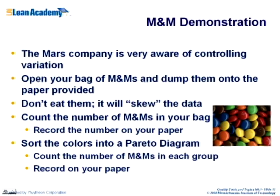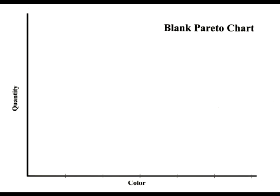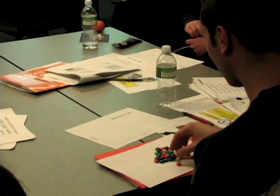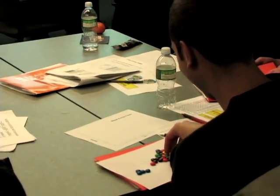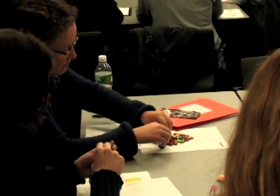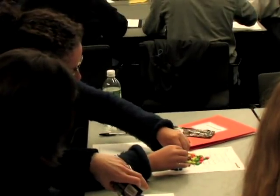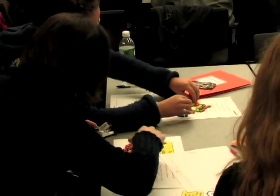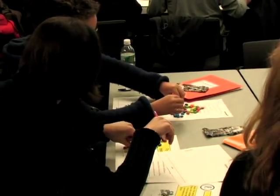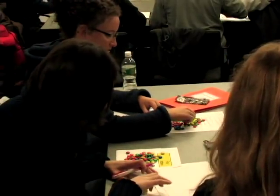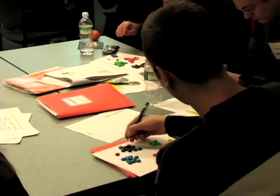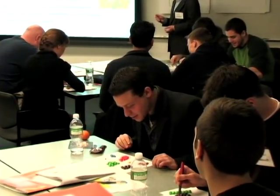Here's a fun exercise — these M&Ms are your dessert for lunch. Open the bag, please don't eat them yet. There's a blank Pareto chart sheet. I want you to count the total number of M&Ms, record it in the corner of the chart, then sort them by color — how many reds, oranges, browns, greens, etc. Don't count the broken ones — you can eat those.